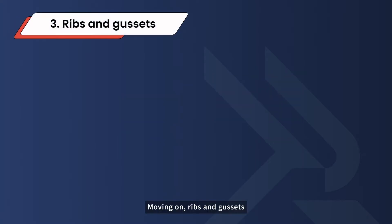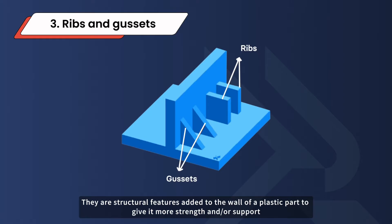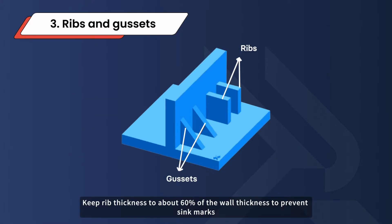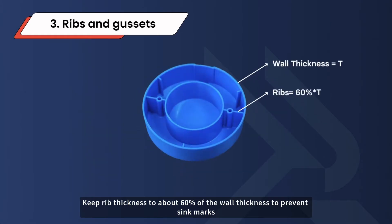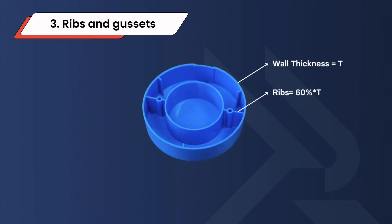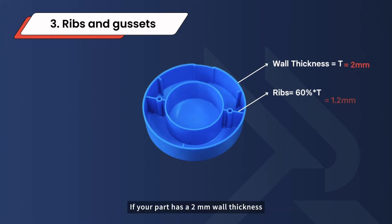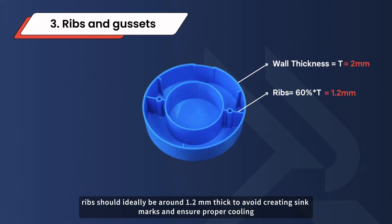Moving on, ribs and gussets are structural features added to the wall of a plastic part to give it more strength and support. Keep rib thickness to about 60% of the wall thickness to prevent sink marks. Ensure they are properly spaced and aligned with the mold flow. If your part has a 2 millimeter wall thickness, ribs should ideally be around 1.2 millimeters thick to avoid creating sink marks and ensure proper cooling.